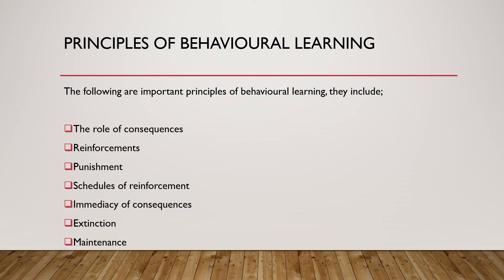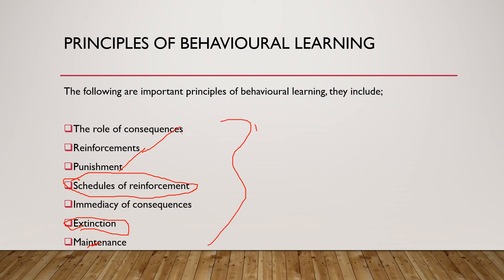There are several principles of behavioral learning, including the role of consequences — reinforcements, both negative and positive — and punishment. The schedules of reinforcement, such as fixed ratio and others, are also important; I encourage you to research further on this topic. Other principles include the immediacy of consequences, extinction, and maintenance. Please read further on these issues to increase your understanding of the principles of behavioral learning.